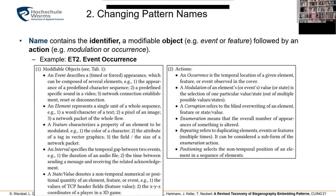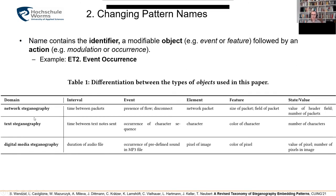To describe the name, we add to the identifier a modifiable object — for instance an event or feature — and an action such as modulate, occur, or position. When we exemplify the objects over different domains: the interval object would be, for network steganography, the time between packets; for text steganography, the time between text notes; and for digital media, it could be the duration of an audio file. A state or value could be a value in a header field, number of packets, number of characters in text, or value of a pixel in an image.